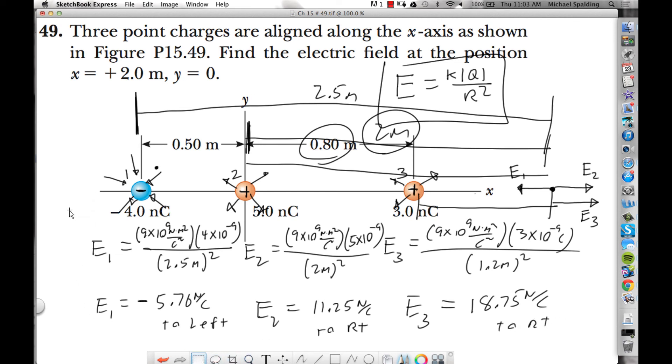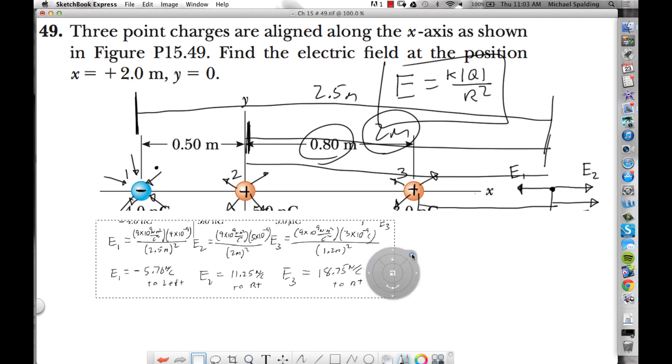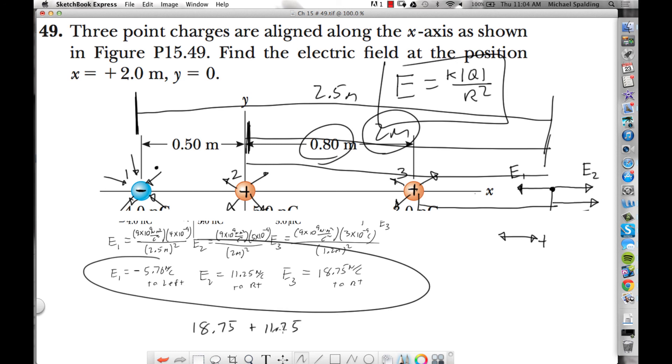So now we're ready to answer it. What will the total electric field be? Basically, we've got to add these all up. So to the right is plus, to the left is minus. So you're going to go 18.75 plus 11.25 minus 5.76. These are all newton per Coulomb. And then the answer comes out as 24.2 newtons per Coulomb to the right.